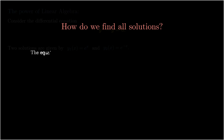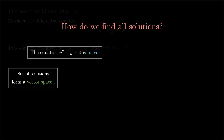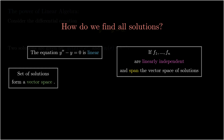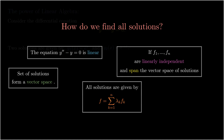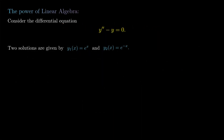A natural question arises: how do we find all solutions and how do we know if we have all solutions? The first thing to observe is that the equation y'' - y = 0 is linear, so the set of solutions forms a vector space. In particular, if we have f₁ through fₙ being linearly independent solutions that span the vector space of solutions, then they form a basis, and all solutions will be given by linear combinations — any solution can be written as a sum from i=1 to n of λₖfₖ.